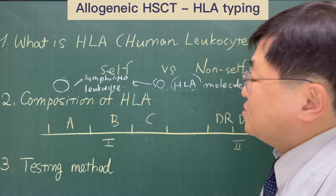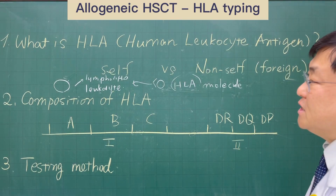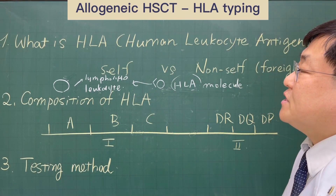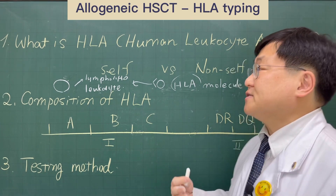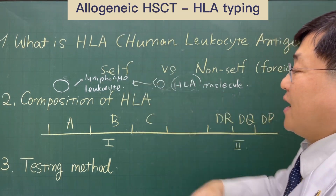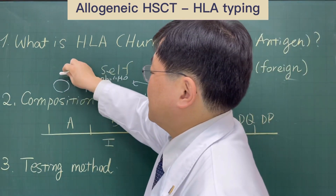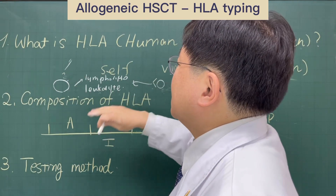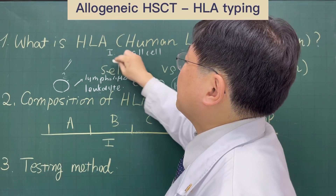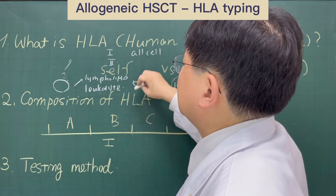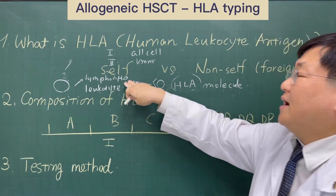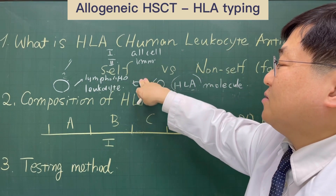So, to react in this way, all human cells have their own signaling materials which can differentiate self from non-self. This is the main concept of the human leukocyte antigen, HLA. The HLA is presented on all cell surfaces — specifically, HLA class 1 is presented on all cells, and HLA class 2 is presented on specific immunologic cells such as T or B lymphocytes, macrophages, and some kinds of leukocyte.